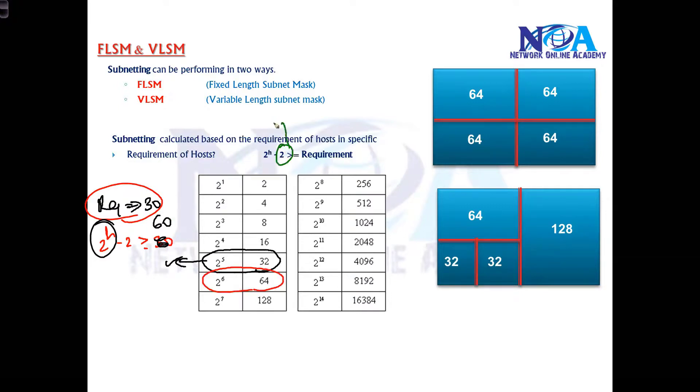The minus 2 is for network ID and the broadcast ID. We'll see this when we get into the calculations.